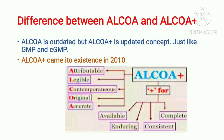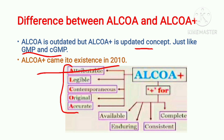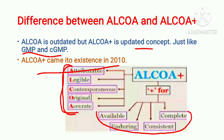ALCOA is an outdated concept, but ALCOA++ is a better concept — just like GMP and cGMP. ALCOA++ came into existence in the year 2010. Before 2010, only five terms existed, which is why it is called ALCOA. After that, four additional terms — Available, Enduring, Consistent, and Complete — were added to ALCOA, making it ALCOA++.